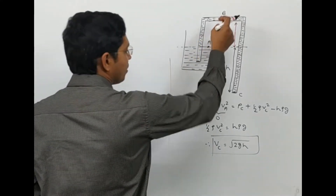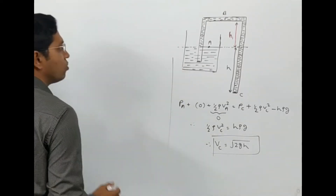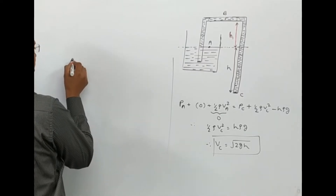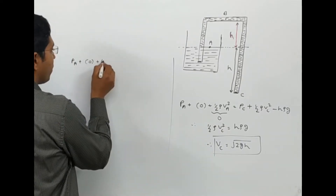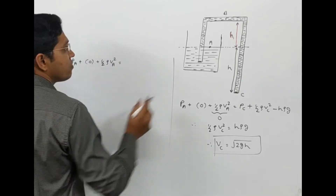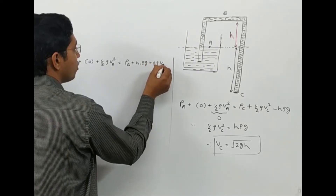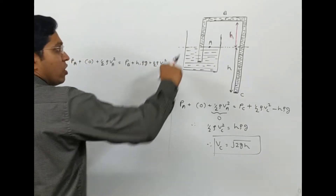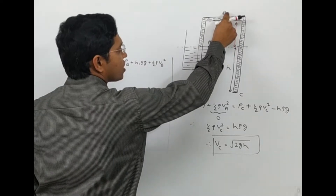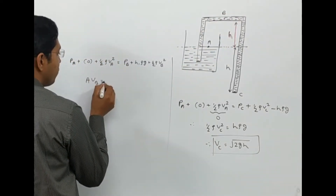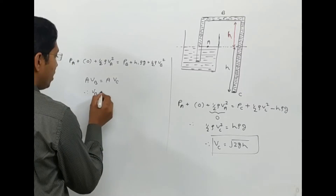Next, I'll apply Bernoulli's equation at point A and point B. Considering the same reference level, we get: PA plus half rho VA squared equals PB plus h1 rho g plus half rho VB squared. Since it is an ideal fluid with uniform cross-section, by the equation of continuity, area into VB equals area into VC, and therefore VB equals VC.